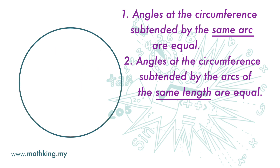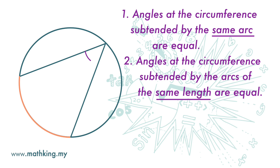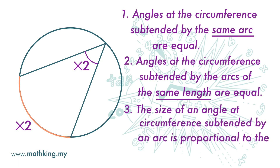Now let's look at this arc again. When the length of this arc increases, the size of the angle at the circumference also increases. When the length of the arc becomes double, the size of the angle at the circumference also gets double. So the size of the angle at the circumference subtended by an arc is proportional to the length of the arc.